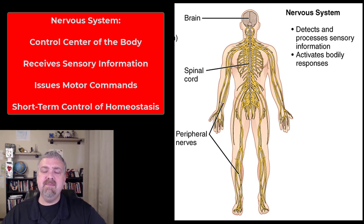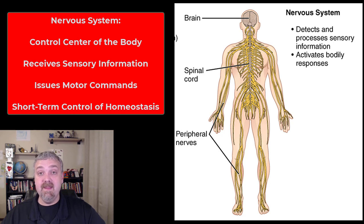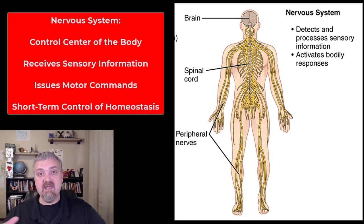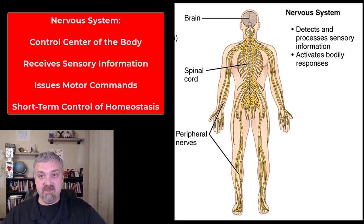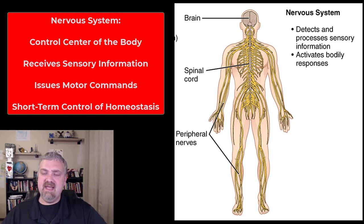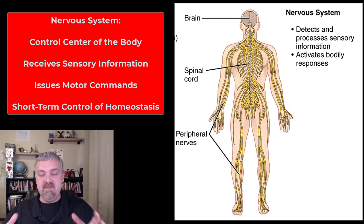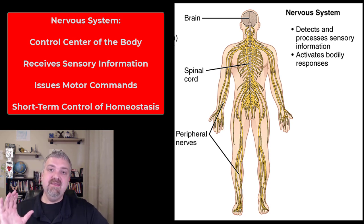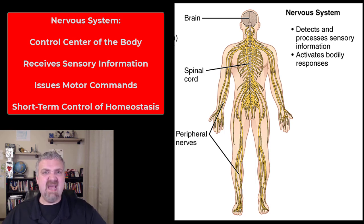The nervous system, along with the endocrine system — the first system covered in AMP2 — is primarily responsible for maintaining homeostasis, a stable internal environment. Your nervous system handles short-term control: responses happen in milliseconds but are short-lived. The endocrine system controls longer-term processes like growth, development, and metabolism. Those are the organ systems covered in AMP1. I hope this helped — have a wonderful day, be blessed.